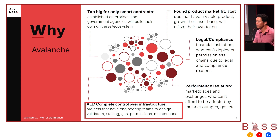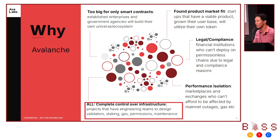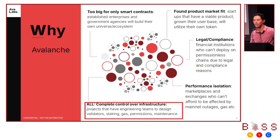What's in common with all these different examples is that they all have complete control over their infrastructure. The projects, some of which already have engineering teams, want to design their own validators, their own staking, their own gas, permissions, and maintenance rules. And Avalanche allows you to do that. Now I'm going to hand it over to Stephen to talk about how the technology is designed for that.